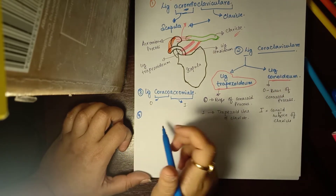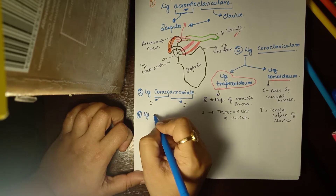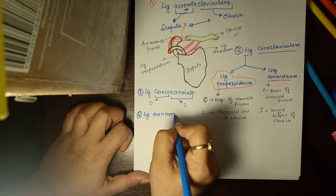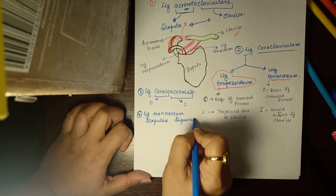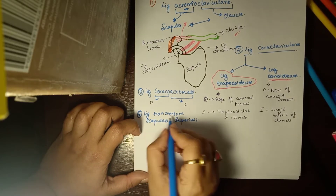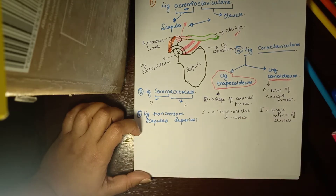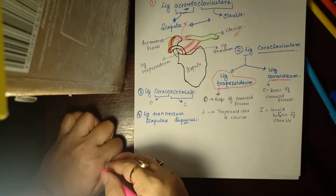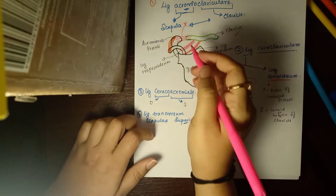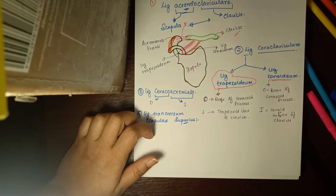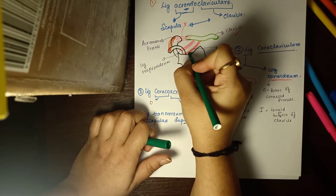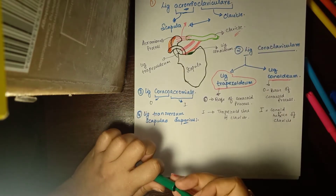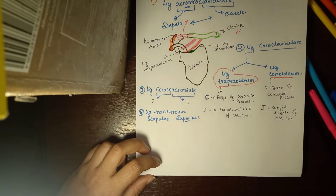There are actually five ligaments in the scapula. The fourth ligament is the ligamentum transversum scapulae superius. By the name, you can tell that this ligament is on the transverse side of the scapula on the superior margin. This ligament is found at the superior notch of the scapula.